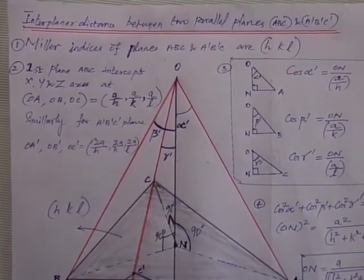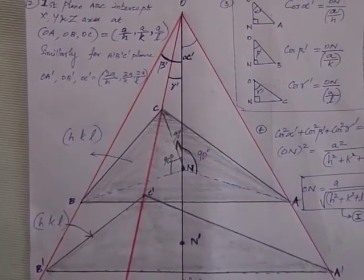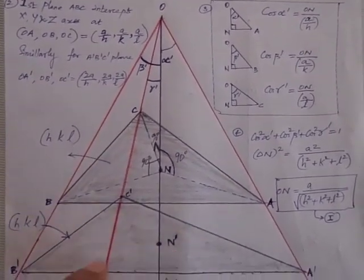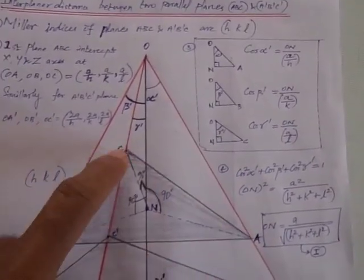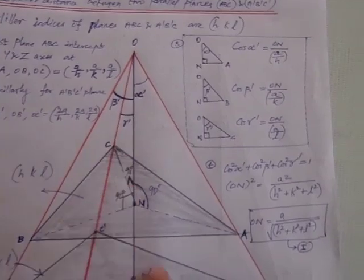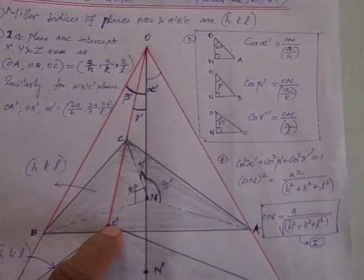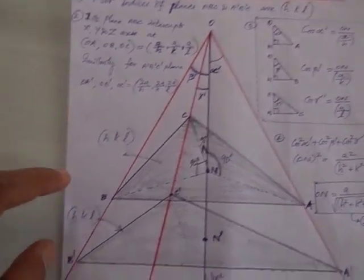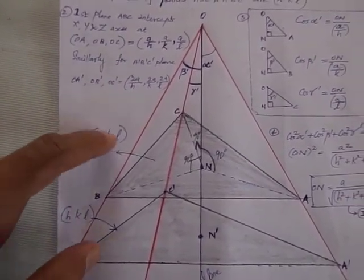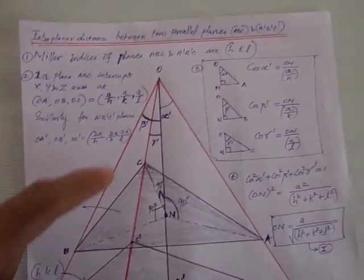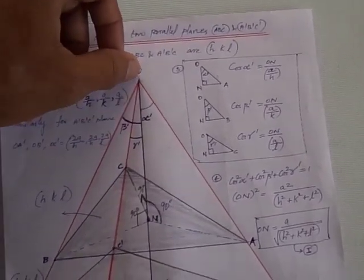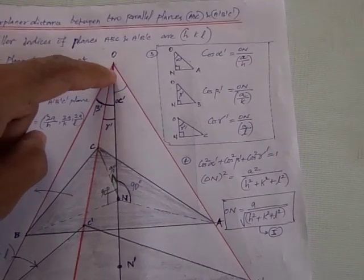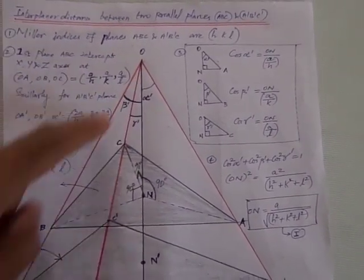We consider two planes: plane ABC and plane A'B'C'. These two planes are parallel to each other, and hence both share the same Miller indices HKL. It is shown here that this is the origin, this is the X axis, this is the Y axis, and this is the Z axis.